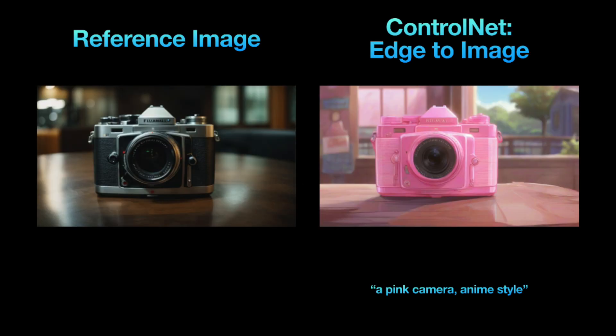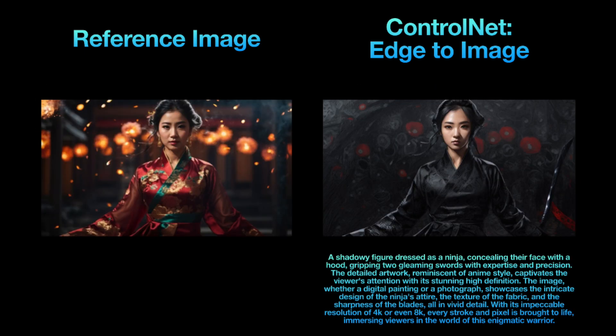Edge to image in ControlNet spots the edges outlining an image and uses them to create a new one. It's handy to alter details in the image while keeping the overall structure or even the facial features — you can switch up colors, vibes, and more. Take a look at this picture of a camera: I altered the color and vibe by asking Leonardo to create a pink camera in anime style, but the overall outline remained unchanged. In a similar example, I crafted a ninja image from a picture of a woman warrior. The outline remains the same, but Leonardo goes beyond copying the pose — every other element on screen, such as the sparks and fireballs in the background, gets replicated in the image on the right.